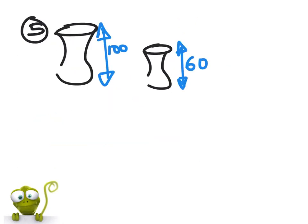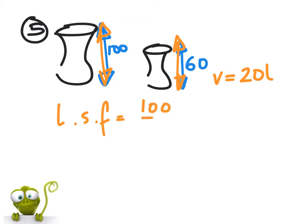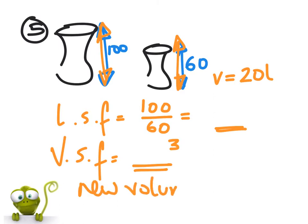Question five: the volume scale factor. We know that one vase is 100 meters tall, and the other one is 60 meters tall, so we can work out the linear scale factor. Now what are we trying to find? We're trying to find the volume of the larger one. We know the volume of the smaller one is 20 liters. That means the larger number goes on the top for the linear scale factor. Cancel that down. How do we find the volume scale factor? We take that answer and we cube it. So the new volume is going to be the old volume, 20, times your volume scale factor.